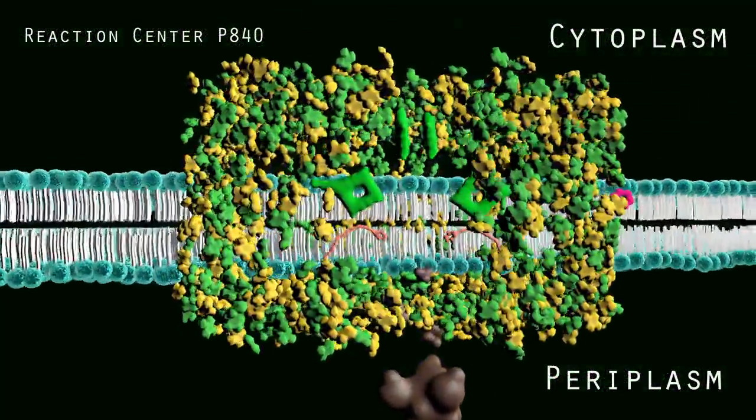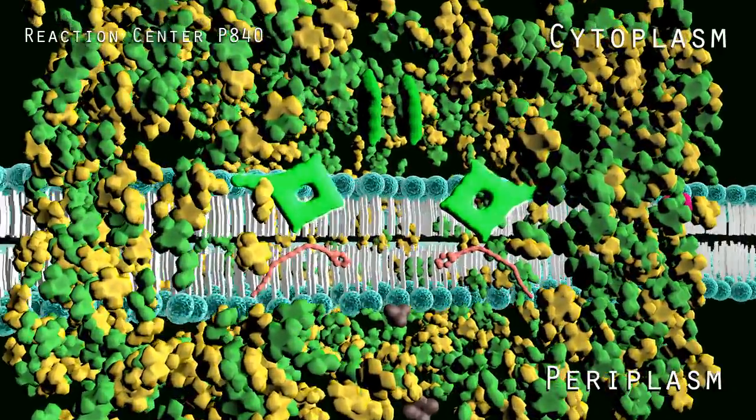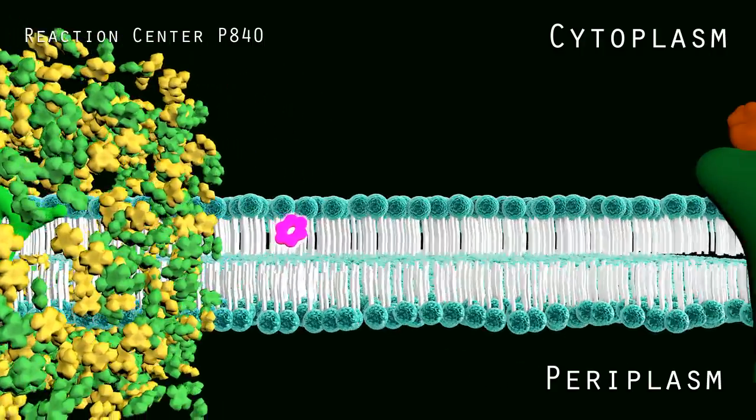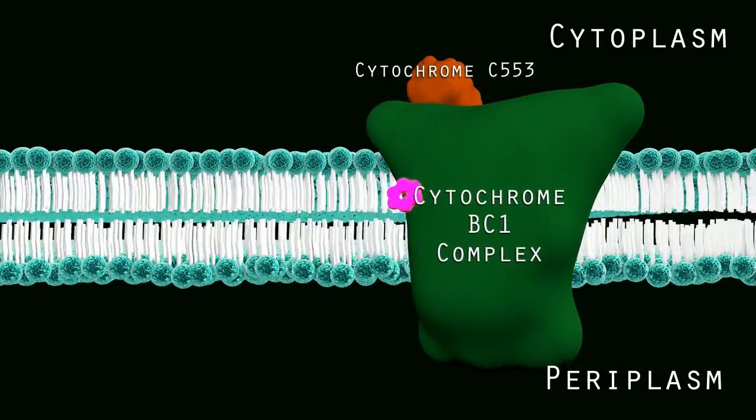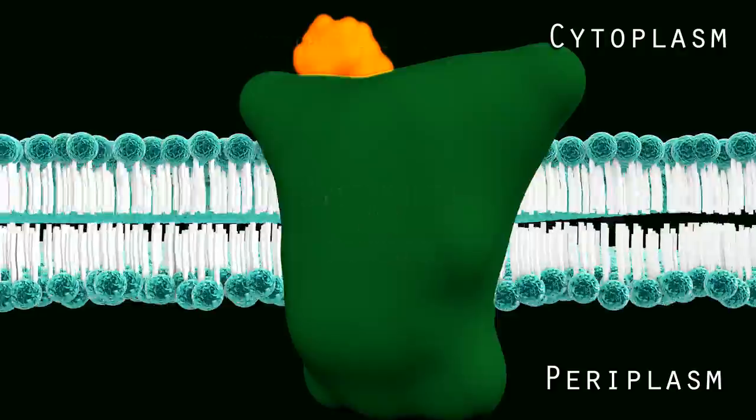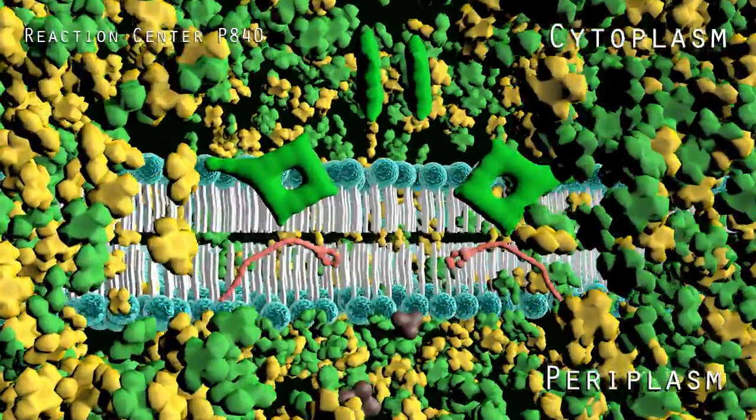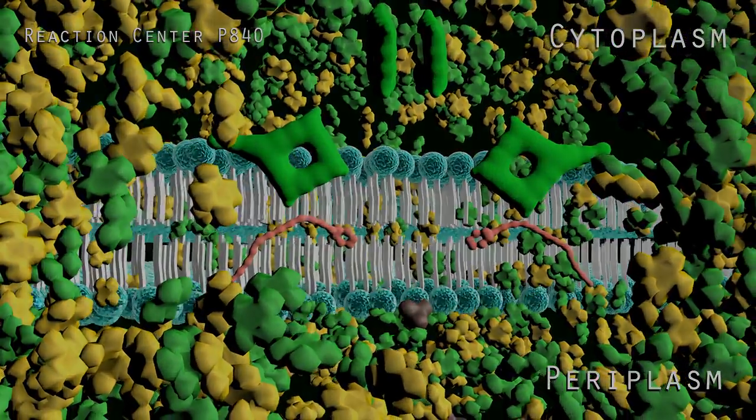Light energy first excites chlorophyll in the P840 reaction center. An electron travels down a series of chlorophyll to an iron protein and finally a quinone. The quinone takes the electron to a cytochrome BC1 complex. The electron then moves to cytochrome 553 which takes the electron back to the reaction center to start the process once again.